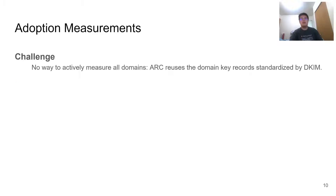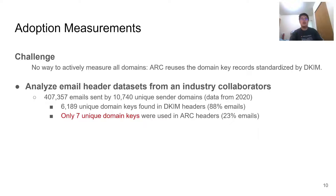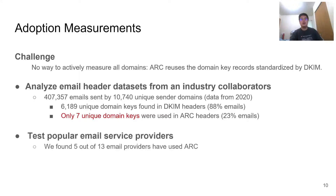The first thing we looked into is adoption measurements. Traditionally, people study the adoption rate of DKIM by scanning domain key DNS records. However, this is not possible for ARC at all, as ARC directly reuses the same DKIM key record. We instead tackle this problem with two other ways. One is to analyze datasets provided by industry collaborators. With the dataset retrieved in 2020, we found over 88% of emails were signed with over 6,000 DKIM keys, while only 7 unique keys from Google, Outlook, Zoho, and a few email marketing services were observed in ARC headers. We also registered accounts with 13 popular email services to verify if they have ARC implemented, but only half had ARC. Our conclusion is that ARC is not yet widely adopted.